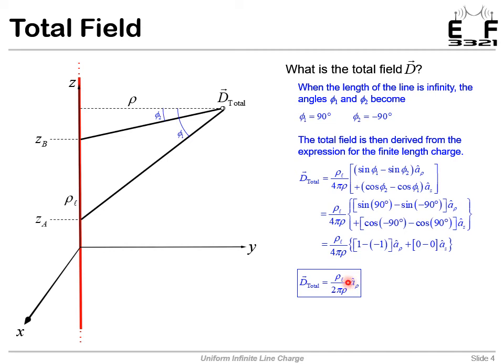And so we still see this 1 over rho dependence. Now, this equation is, of course, a lot simpler than our original equation.